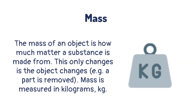The mass of an object is how much matter a substance is made from. This only changes as the object changes — for example, if a part of the object is removed. Mass is measured in kilograms.